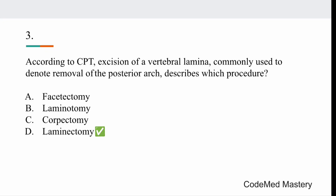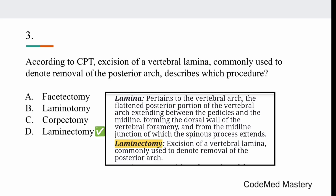In your CPT manual under the musculoskeletal system, there are definitions related to this. Laminectomy is defined as excision of a vertebral lamina, commonly used to denote removal of the posterior arch — please highlight this. These definitions appear above the code for arthrodesis, above code 22590. Facetectomy is removal of the facet. Laminotomy is removal or opening in the lamina, not full excision. Corpectomy is removal of the vertebral body, not the posterior arch.